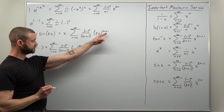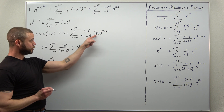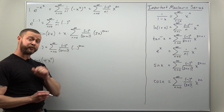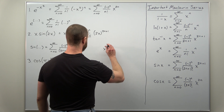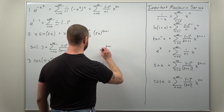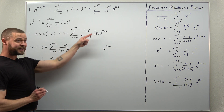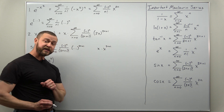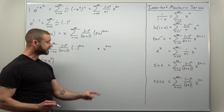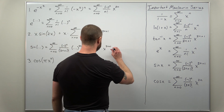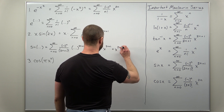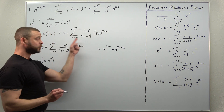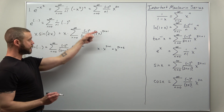We apply exponent rules — multiplying powers gives us 2 to that power times x to that power, and we also have the power of x out front. When you multiply, you get x to the 2n plus 1, and the x out front can be combined with the other power of x by adding exponents — that's x to the 1 — so we can rewrite this as x to the 2n plus 2 power.